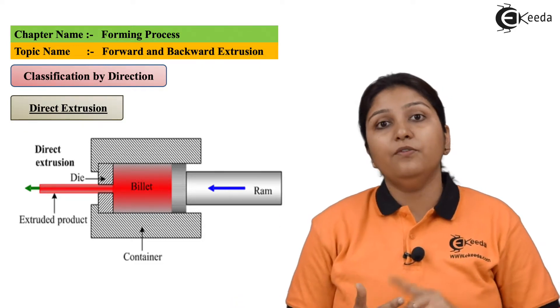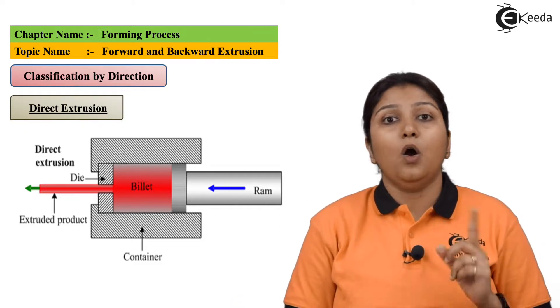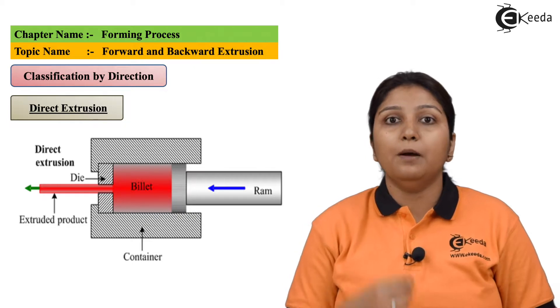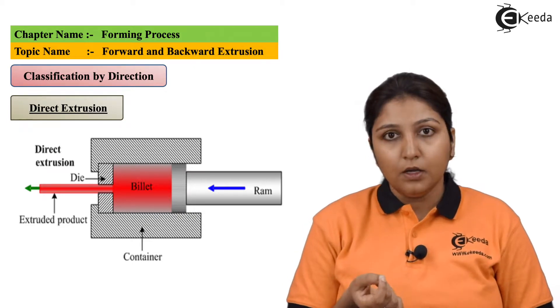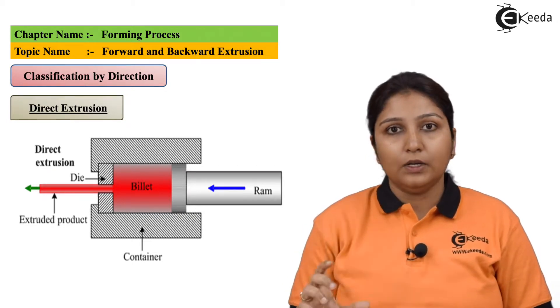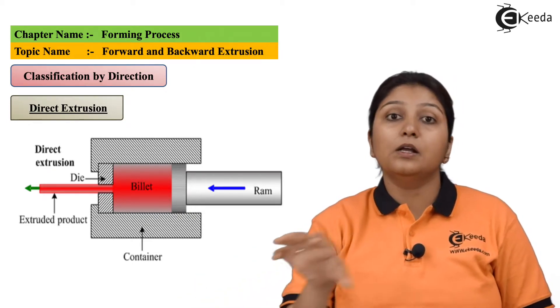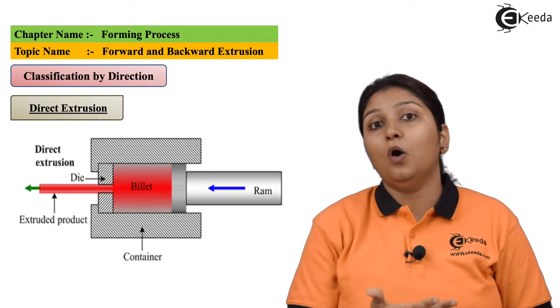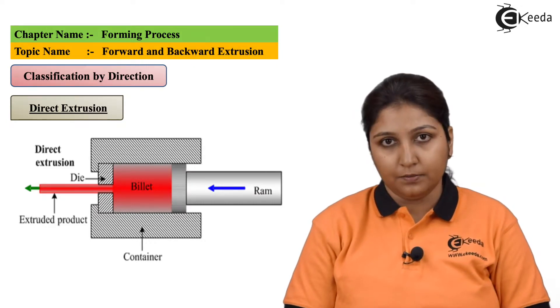If you need a hollow object, in this case you have to keep a billet at the opening so that the material comes out in the form of a hollow section.